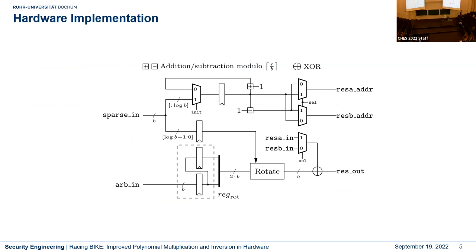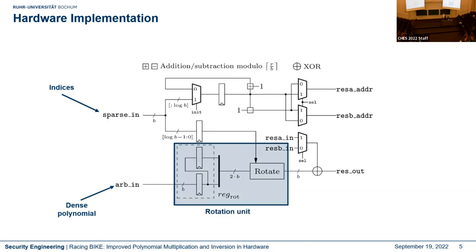This is the hardware core we implemented. It consists of basic elements: registers, multiplexers, an adder/subtractor, a rotation unit, and an accumulation stage. When performing multiplication in hardware, we start by reading one index of the sparse polynomial, then read in chunks of the dense polynomial. Since polynomials consist of at least 12,000 bits, we split them into chunks of b bits, store two chunks in registers, and perform a bit-word rotation defined by the lower bits of the sparse index.